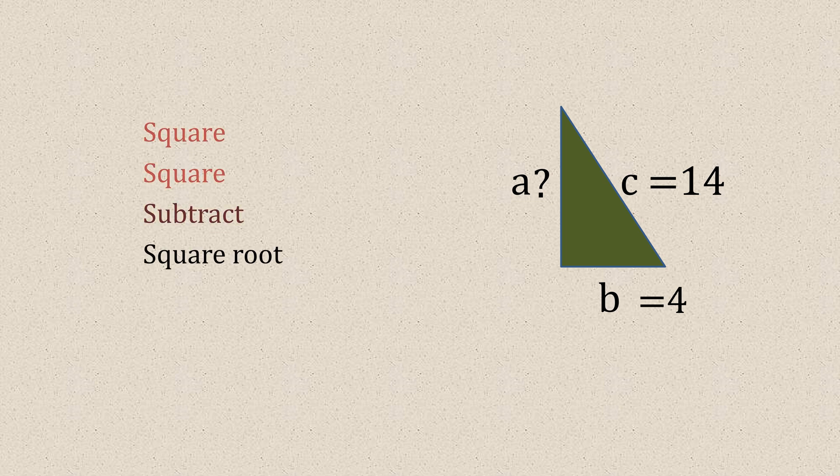So we can't square a, that's what we're looking for. So we square c, gives us 196. We square b, gives us 16. So now we take 16 away from 196, subtract that, that gives us 180.